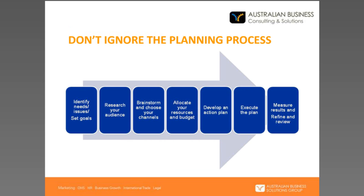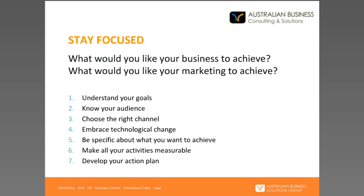What's your plan of action? We've outlined a few things you need to look at in terms of the planning process: identifying your needs and goals, doing a bit of research, brainstorming, allocating resources, developing your action plan, executing, and measuring your results. Doing anything these days is expensive and none of us has money to waste, but the more thought that goes into planning like this, the more cost-effective and effective your marketing will be.